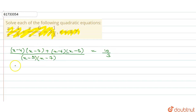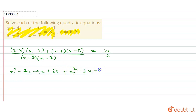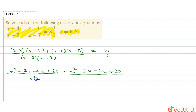So the numerator expands as: x minus 7, x minus 4 gives x squared minus 4x minus 7x plus 28. Plus x into x minus 5x minus 6x plus 30. The denominator expands as: x squared minus 7x minus 5x plus 35.